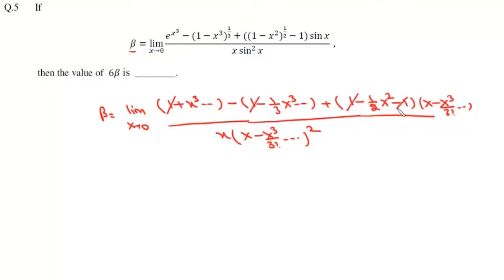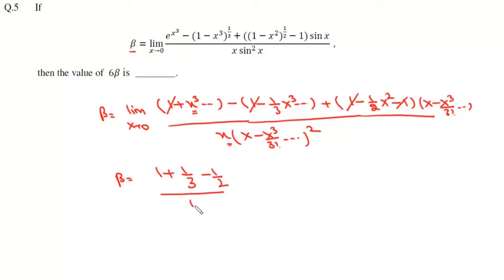Here, the 1 and 1 cancel, and here also the 1 and 1 cancel. The minimum power of x in the numerator is 3, and the minimum power of x in the denominator is also 3. So the value of this limit is the coefficient of x cubed in the numerator upon the coefficient of x cubed in the denominator. The coefficient of x cubed in the numerator is 1 plus 1 by 3, minus 1 by 2, giving us 6 plus 2 minus 3 over 6. So the value of 6 beta is 5, and that is the answer to this question.